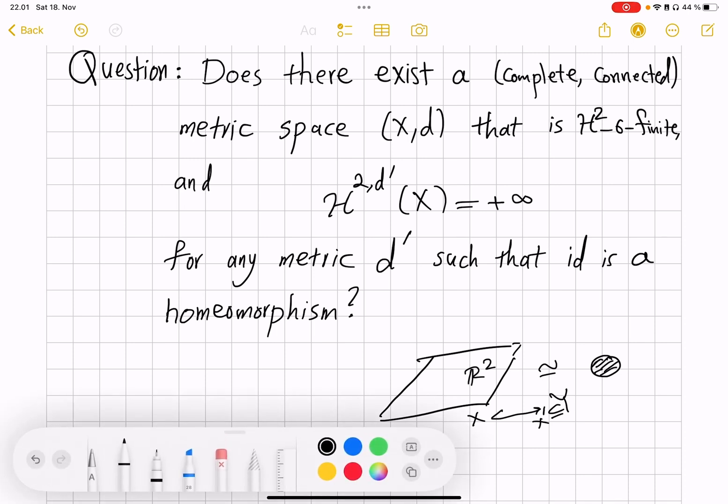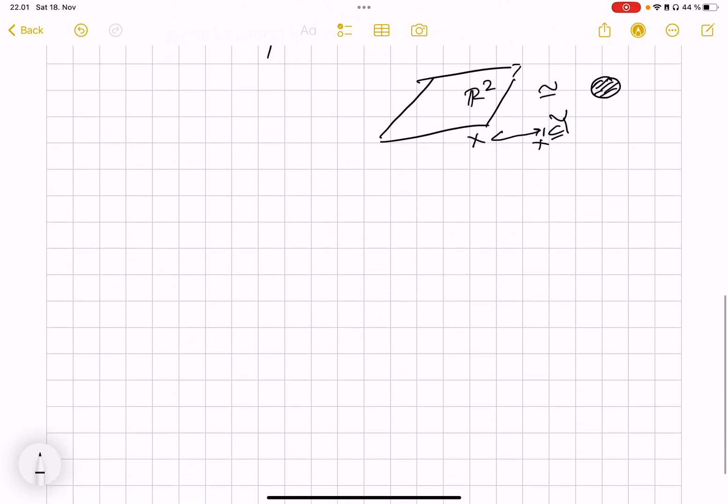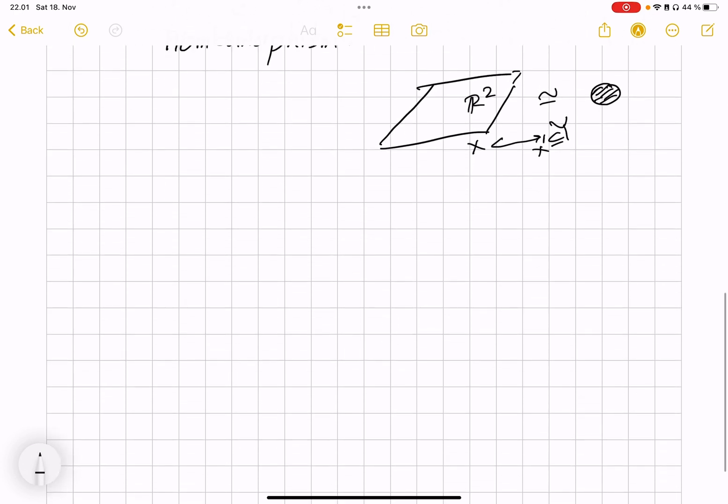In that theorem example, this also shows that you cannot embed that space into any metric space with finite H^1, because if it embedded homeomorphically into a subset of a space with finite H^1, then of course that metric pulled back would contradict the theorem.